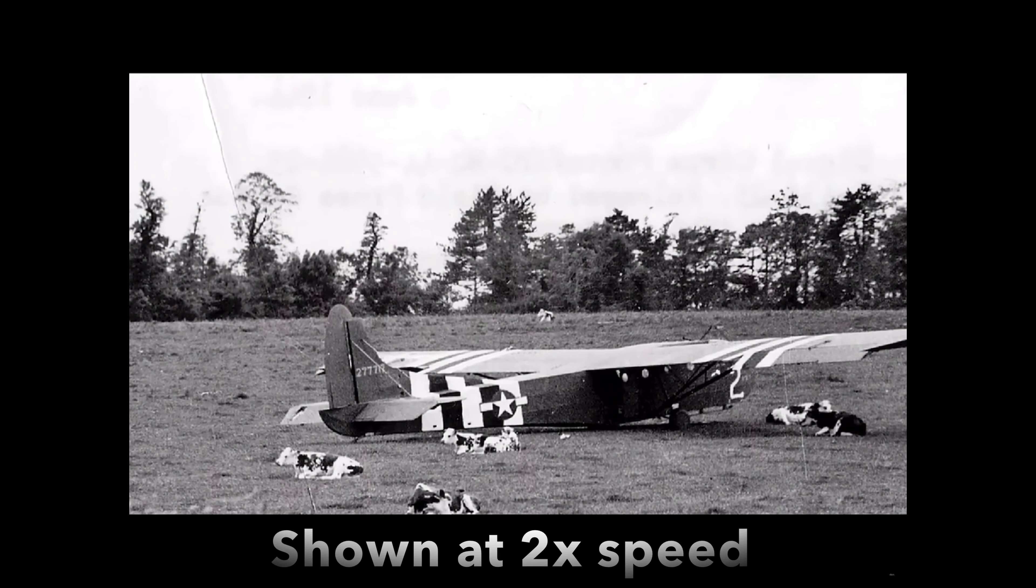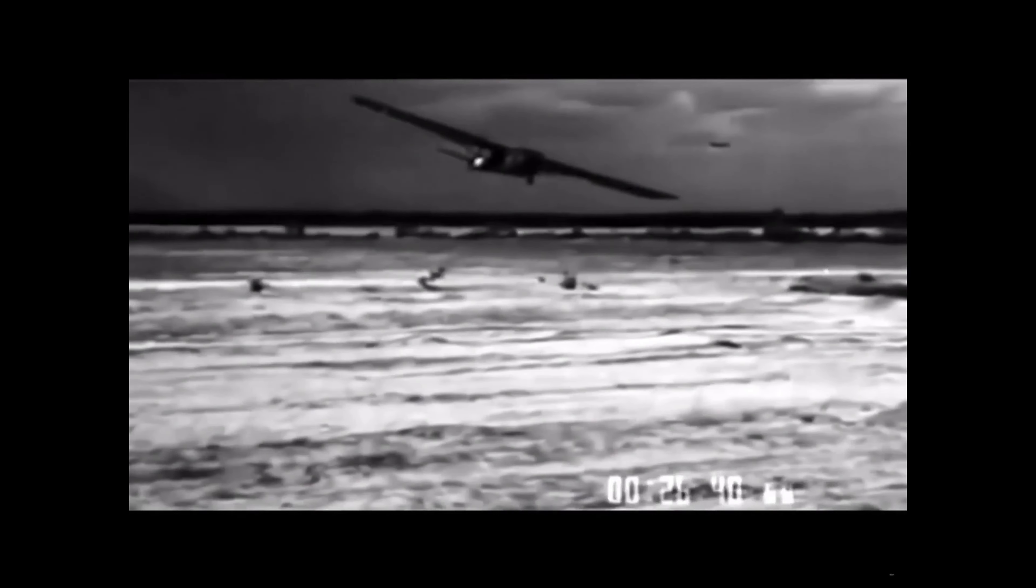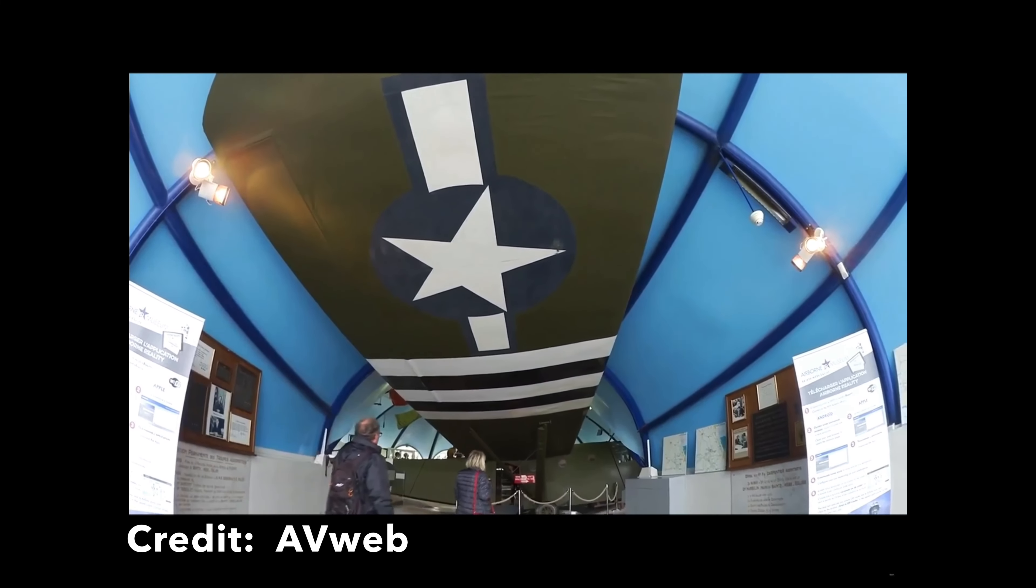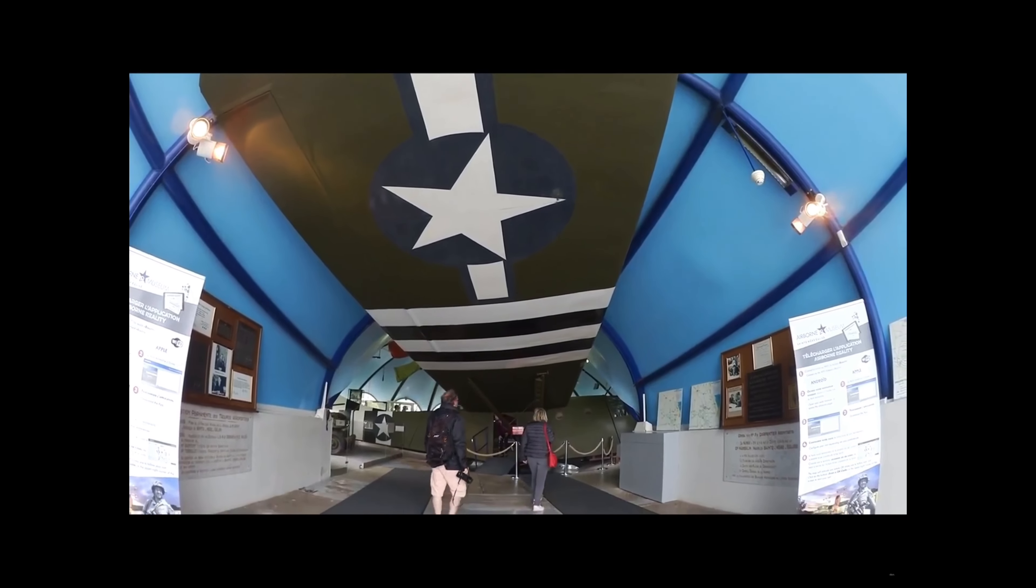There are a few of these gliders left today because they were considered highly expendable at the time, but you can still see some today. I'll put links in the description below so you can see the museums where you can find these today, plus the sources I used for parts of this video. The Waco gliders were mainly towed by Douglas C-47s, which were the workhorses of the U.S. Army Air Corps.